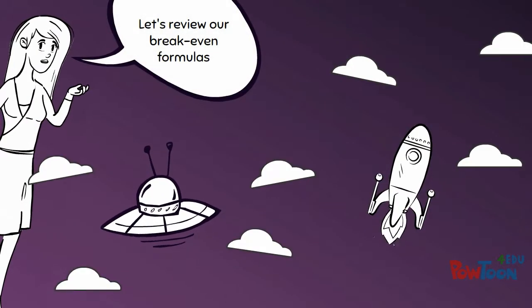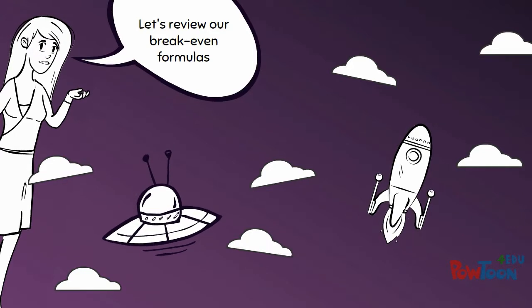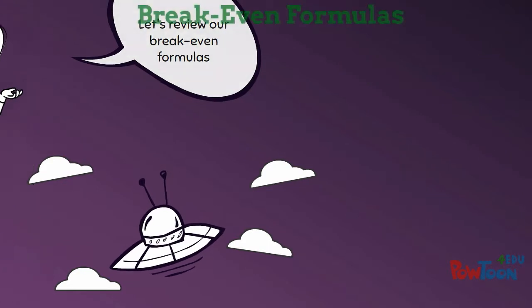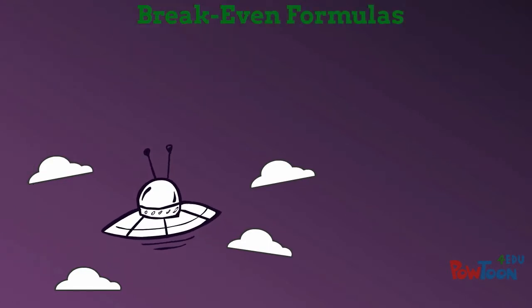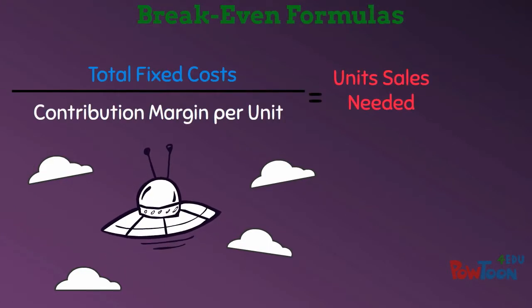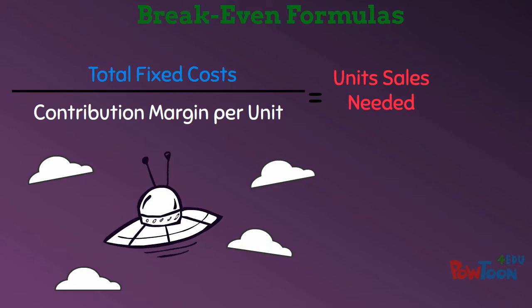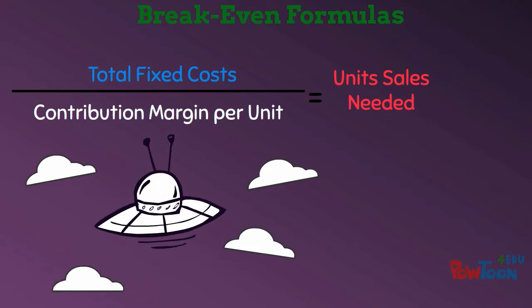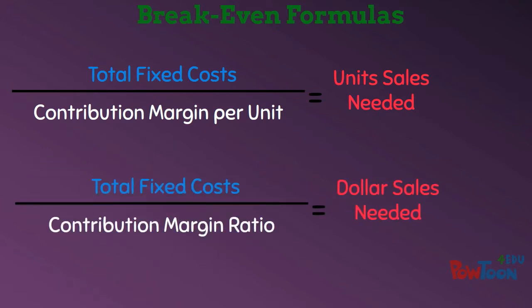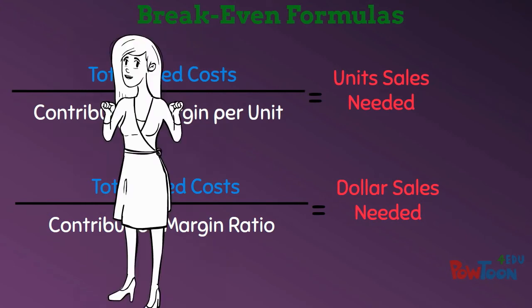Now let's review our two methods for finding our breakeven point. You can use either the contribution margin per unit to find the number of sales units needed, or the contribution margin ratio to find the dollar sales needed to break even.